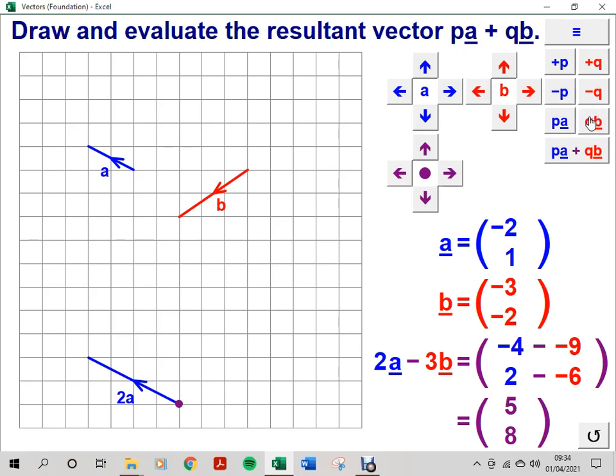And minus 3B, or minus 3 lots of vector B from the end point of 2A looks like this. And again, I've added an appropriate vector label.